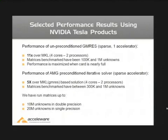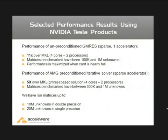Let's have a look at performance — how those things run. If we take just one card, the GTX 1060 in this case, and compare it to two processors with four cores — we didn't do this with Nehalem yet — we were seeing 11 times speedup over MKL. The size of matrices that we looked at varied from 100,000 unknowns to 1 million unknowns. As you would expect, performance is maximized when your memory on the graphics card is more or less full.